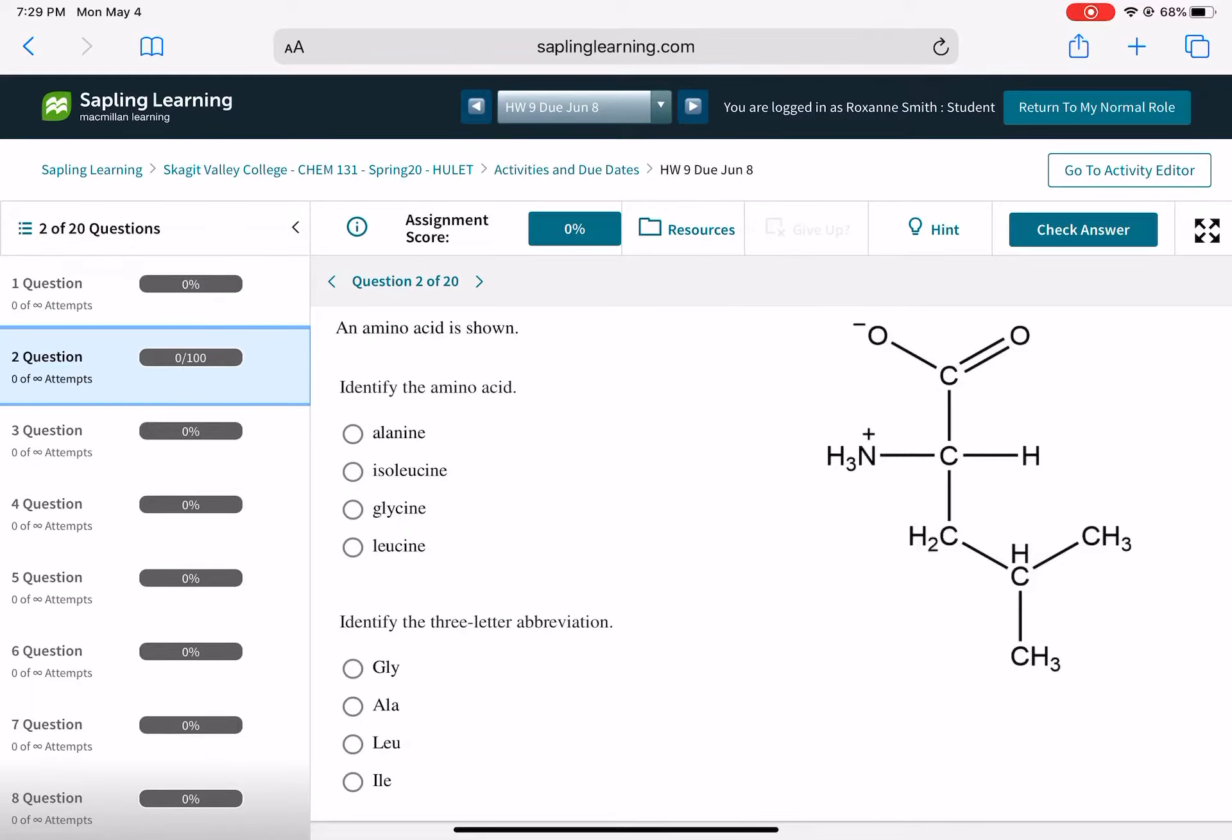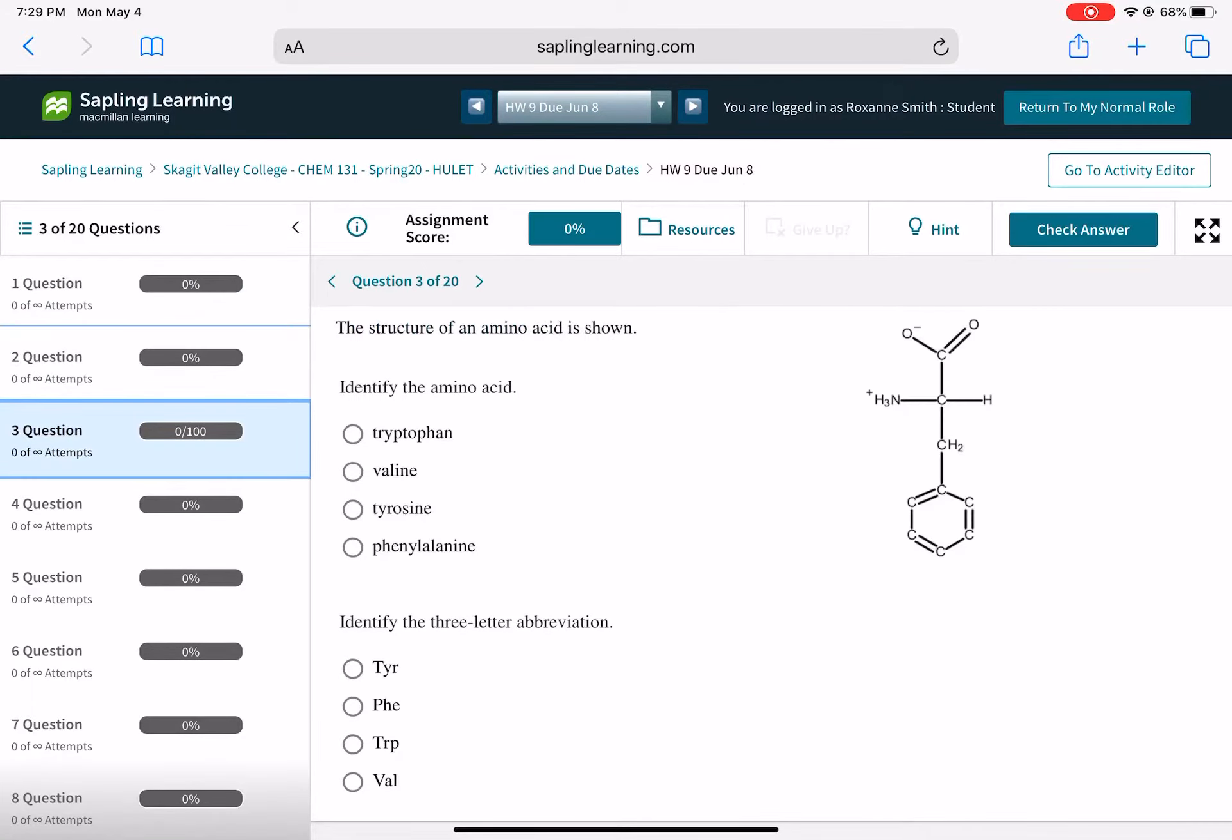Next question, and the next few questions are like this. Two, three, four, five. It gives you the structure of an amino acid. It asks you to identify it. And so that means you're going to be looking at the R group, and you're going to be looking at a table of amino acids and just matching it up, matching up the R group with what you see on the table.